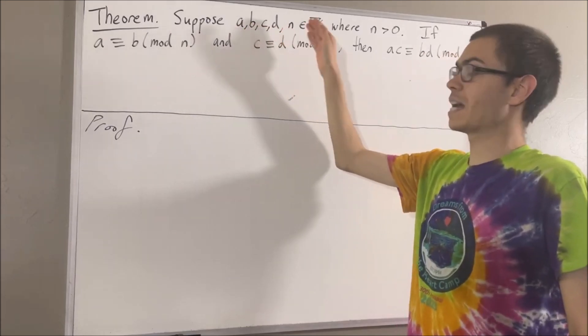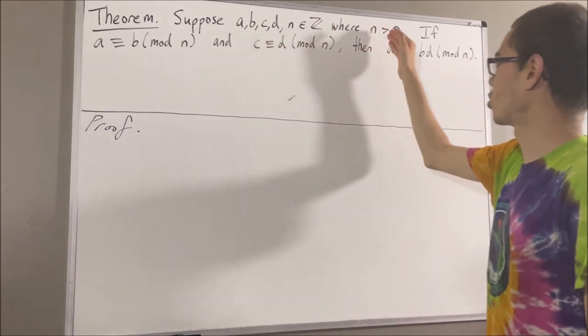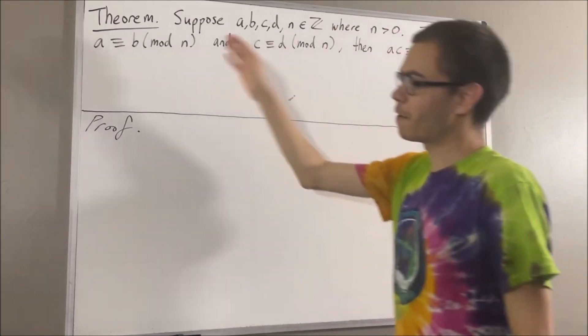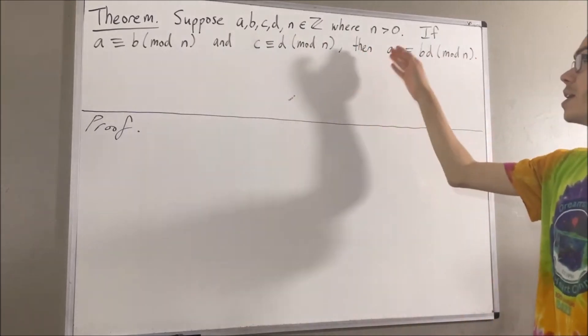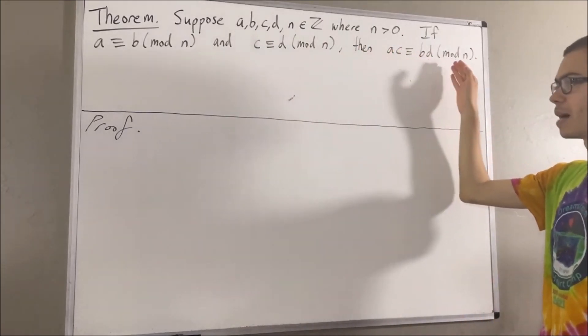Suppose a, b, c, d, and n are integers where n is greater than zero. If a is congruent to b modulo n and c is congruent to d modulo n, then ac is congruent to bd modulo n.